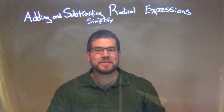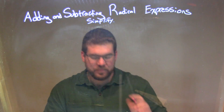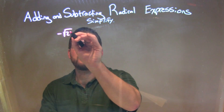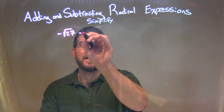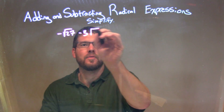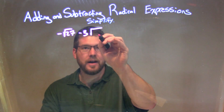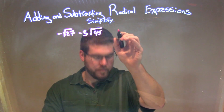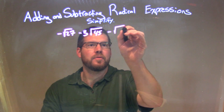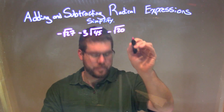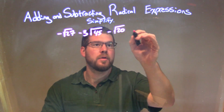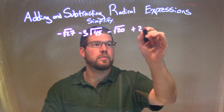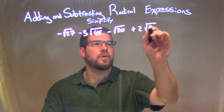So if I was given this expression: negative square root of 27 minus 3 square root of 45 minus the square root of 20 plus 2 square root of 45.